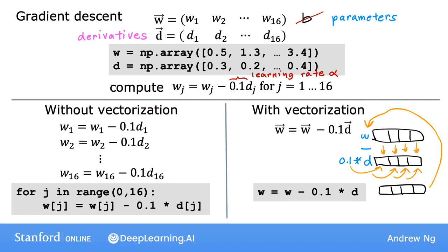So using a vectorized implementation, you should get a much more efficient implementation of linear regression. Maybe the speed difference won't be huge if you have 16 features, but if you have thousands of features and perhaps very large training sets, this type of vectorized implementation will make a huge difference in the running time of your learning algorithm. It could be the difference between code finishing in one or two minutes versus taking many, many hours to do the same thing.